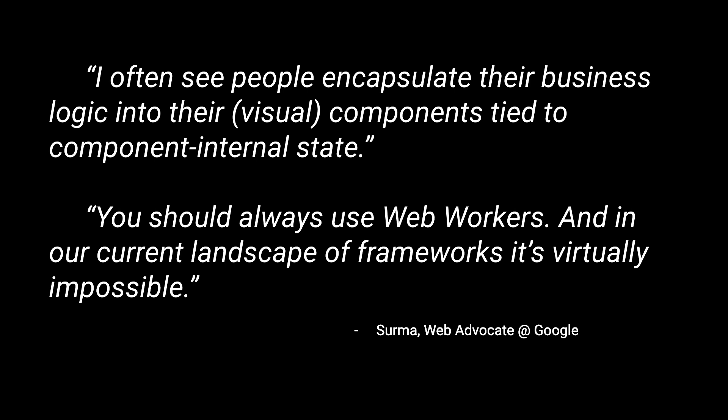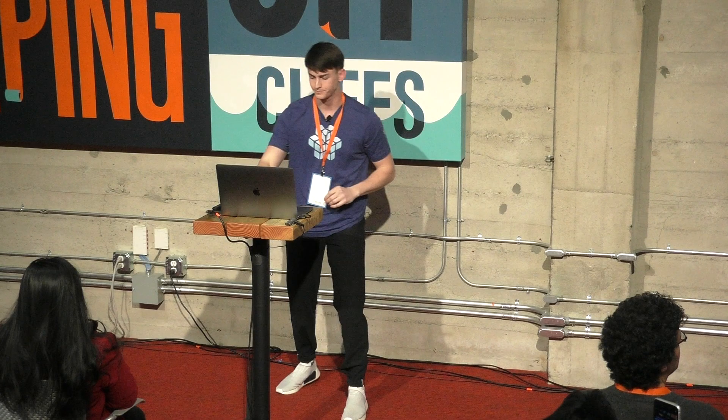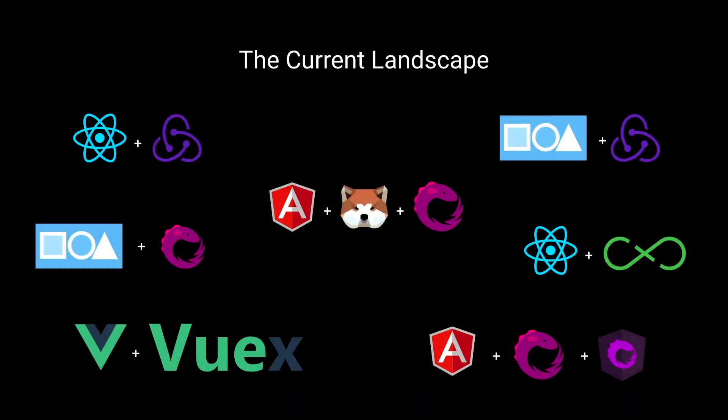Surma, a web advocate at Google, has two great quotes that are really relevant. One: he often sees people encapsulate their business logic into their visual components, and this is tied to component internal state. And number two: when should you use web workers? Always. Web workers are fantastic. In the current landscape of frameworks, this is very difficult. I've dealt with all of them — React, Flux, Redux, Angular, RxJS, the whole nine yards — and I'm going to talk about two in particular that were the shining knights, and what we learned from them and brought into our platform called Runtime.